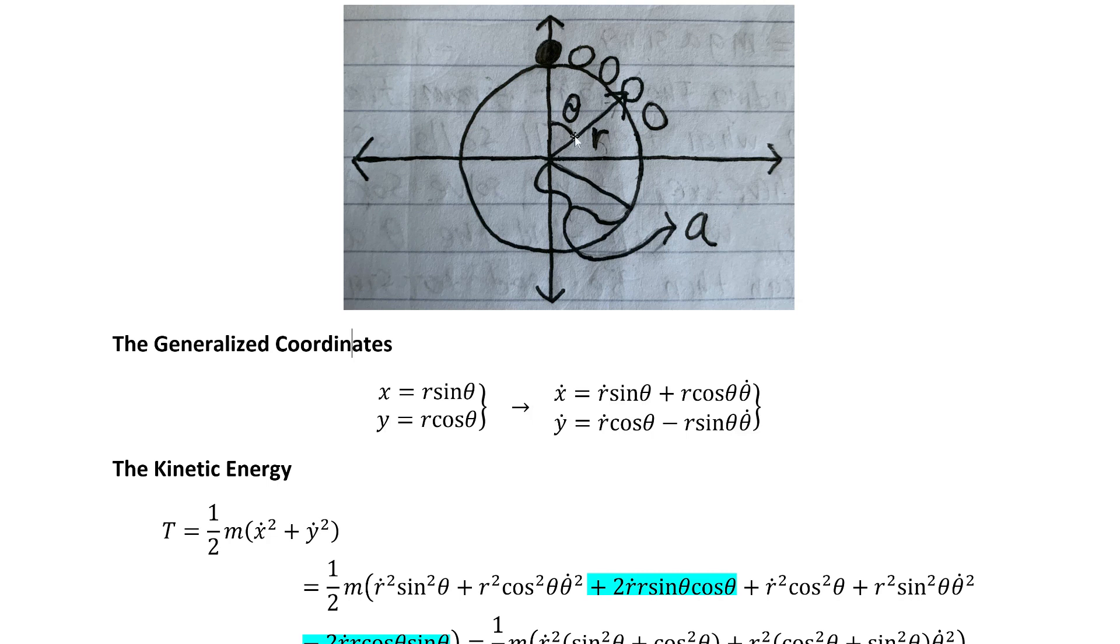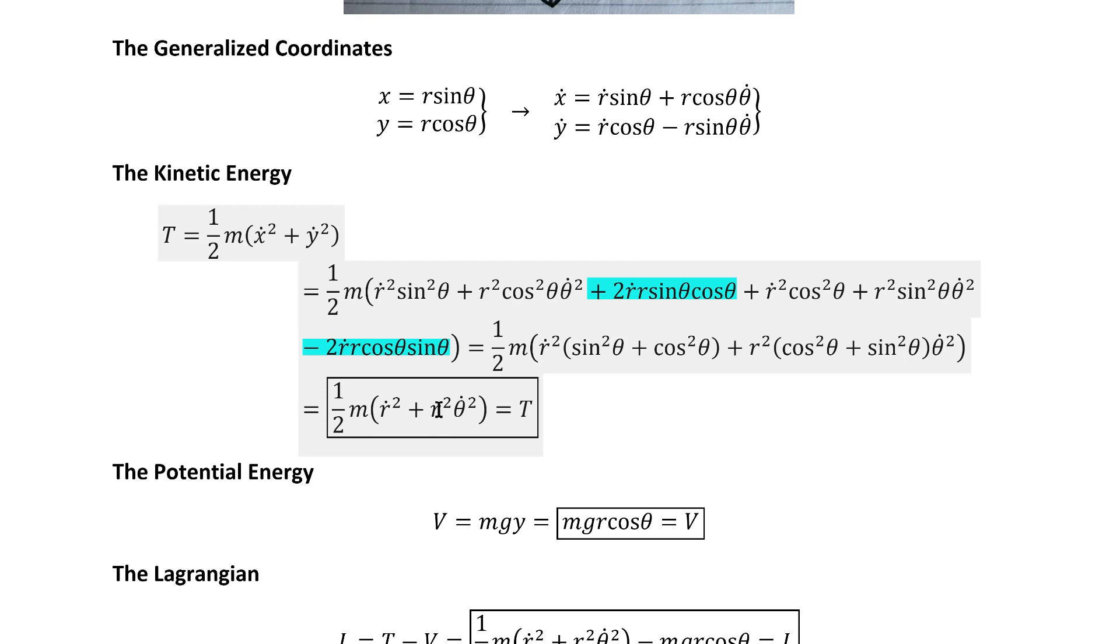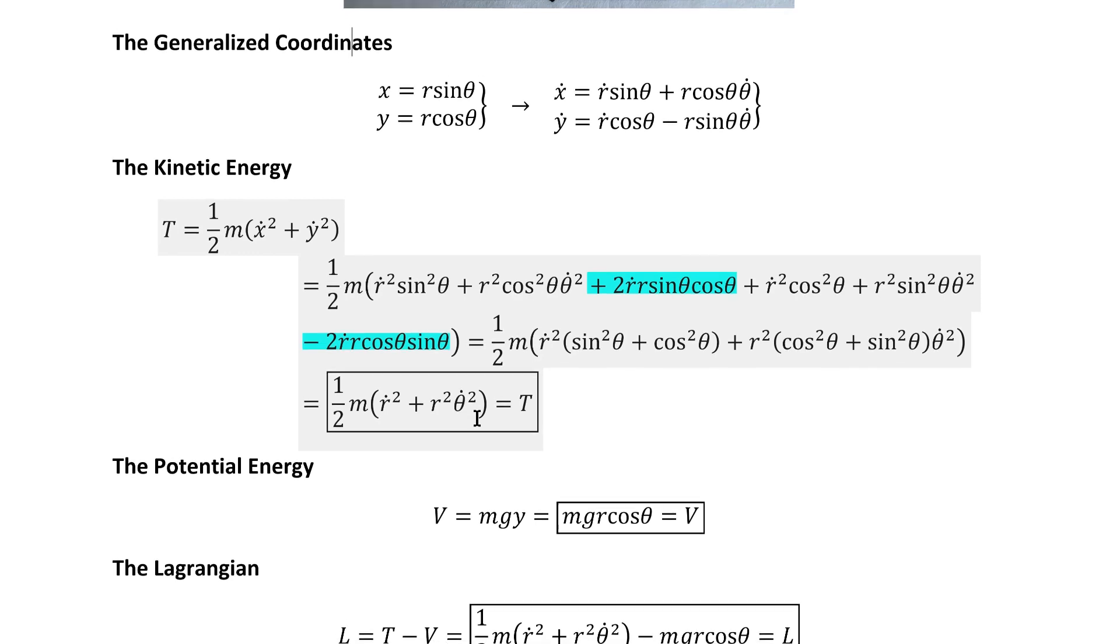Given the circular nature of this problem, polar coordinates are the obvious choice for the generalized coordinates, giving us these velocities. We can then work out the kinetic energy as usual. We have two terms that cancel and then some simplification from the Pythagorean trig identity, ultimately giving us this expression for the kinetic energy, which may be familiar to you if you've worked with polar coordinates in the past in the study of other systems.